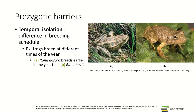Temporal isolation also happens in certain frogs where they breed at different times of the year. Often with temporal isolation, if you bring these separate species into the lab, they can produce fertile hybrids. But in the wild, because they aren't available to each other at the right time, they are considered separate species.